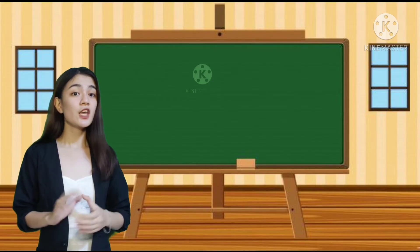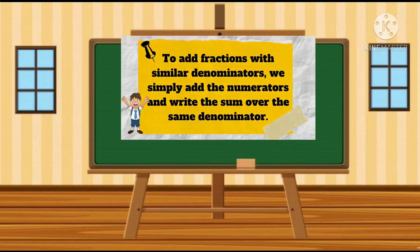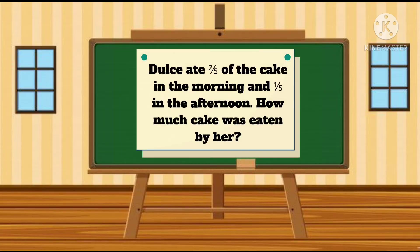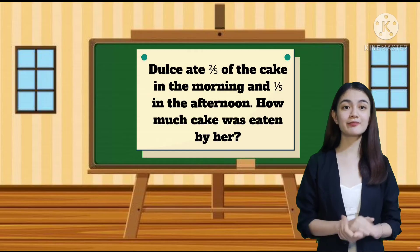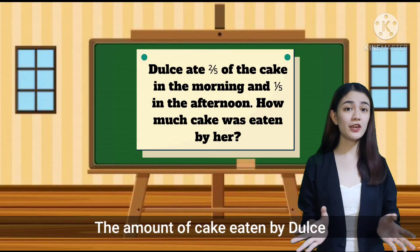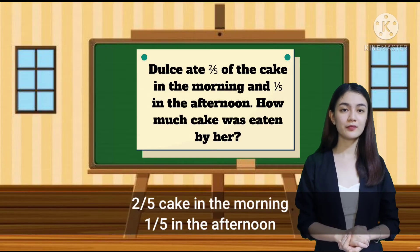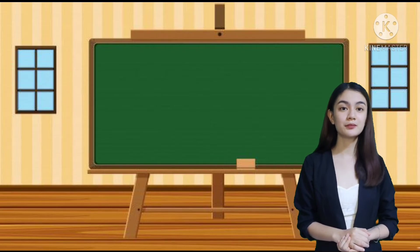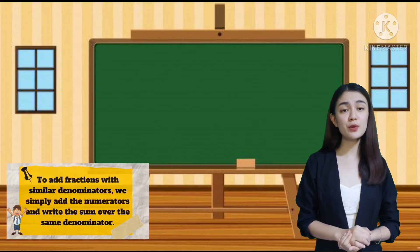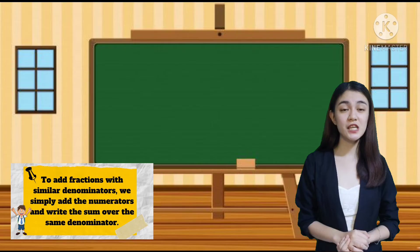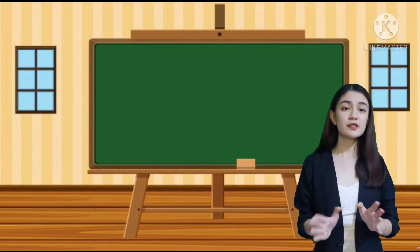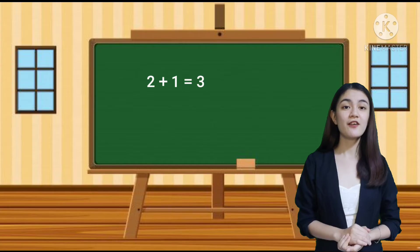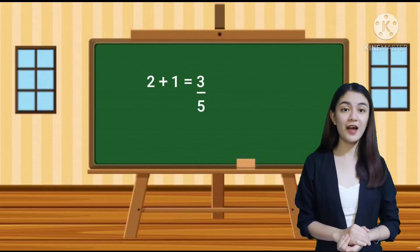To add fractions with similar denominators, we simply add the numerators and write the sum over the same denominator. What is asked? What are given? We simply add the numerators and write the sum over the same denominator. So we add 2 plus 1, which equals 3, and then write it over the same denominator, which is 5. So we get 3 over 5. Did you get it?